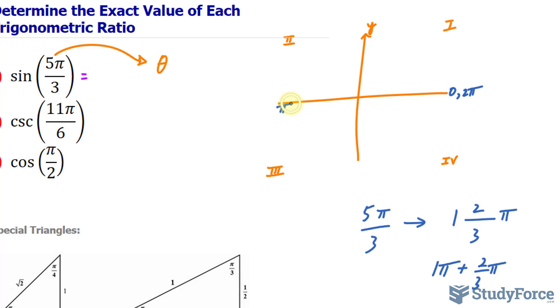2/3 of a π means that we have passed this quadrant, and now we're 2/3 along the way, so we are in the fourth quadrant. That means that this angle, 5π over 3, is in the fourth quadrant.